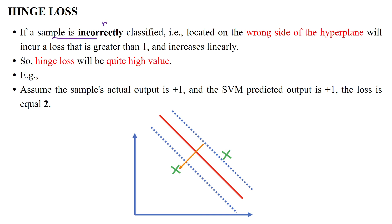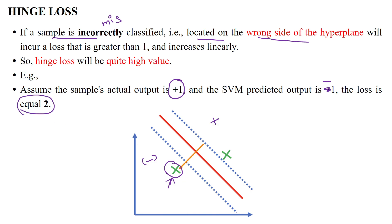Another case is when the sample is incorrectly classified — misclassified. The data point is located on the wrong side of the hyperplane. For example, the data point belongs to the positive class but is placed in the negative class region. When it is predicted as a negative class, the loss function value is quite high, equal to approximately 2. When data is misclassified, the hinge loss always has a higher value.